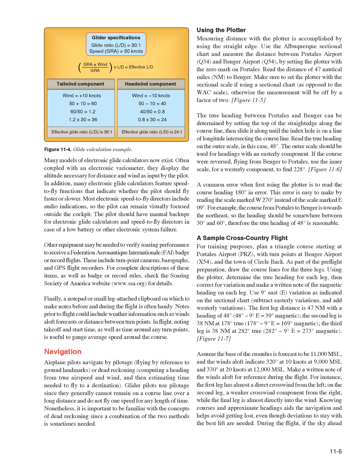Sample cross-country flight for training purposes: plan a triangle course starting at Portales Airport (PRZ), with turnpoints at Benger Airport (X54) and the town of Circleback. As part of pre-flight preparation, draw the course lines and determine true heading for each leg, correcting for variation. Using 9 degrees east variation: the first leg is 47 NM at 48 degrees true, giving 39 degrees magnetic; the second leg is 38 NM at 178 degrees true, giving 169 degrees magnetic; the third leg is 38 NM at 282 degrees true, giving 273 degrees magnetic.